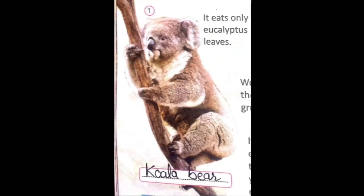Look at the first picture. It eats only eucalyptus leaves. Eucalyptus tree is an evergreen tree, and the leaves are used for medicine. The correct answer is koala. Koala eats only eucalyptus leaves.